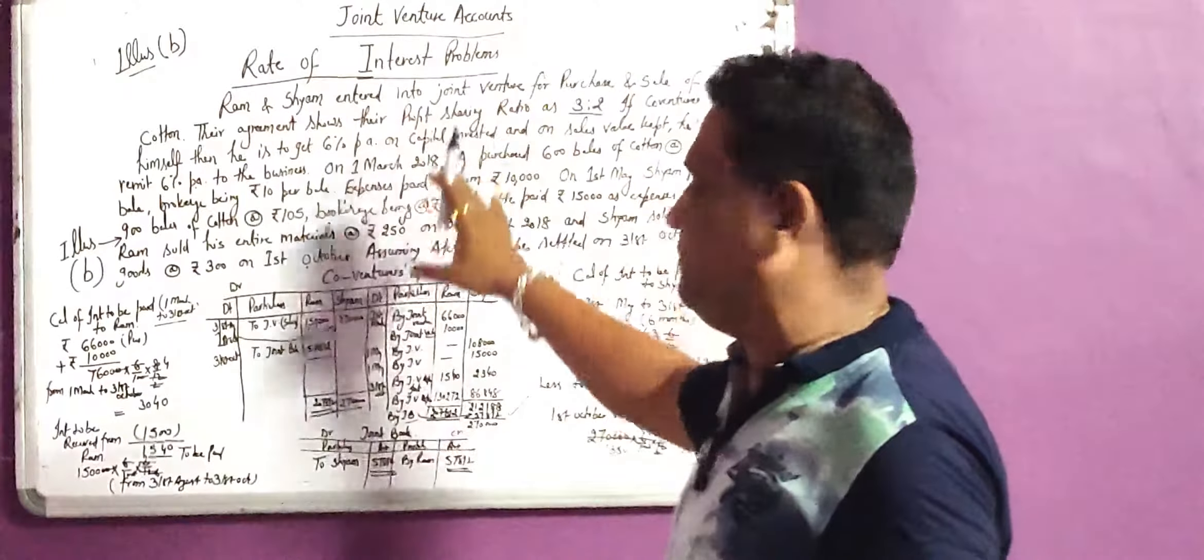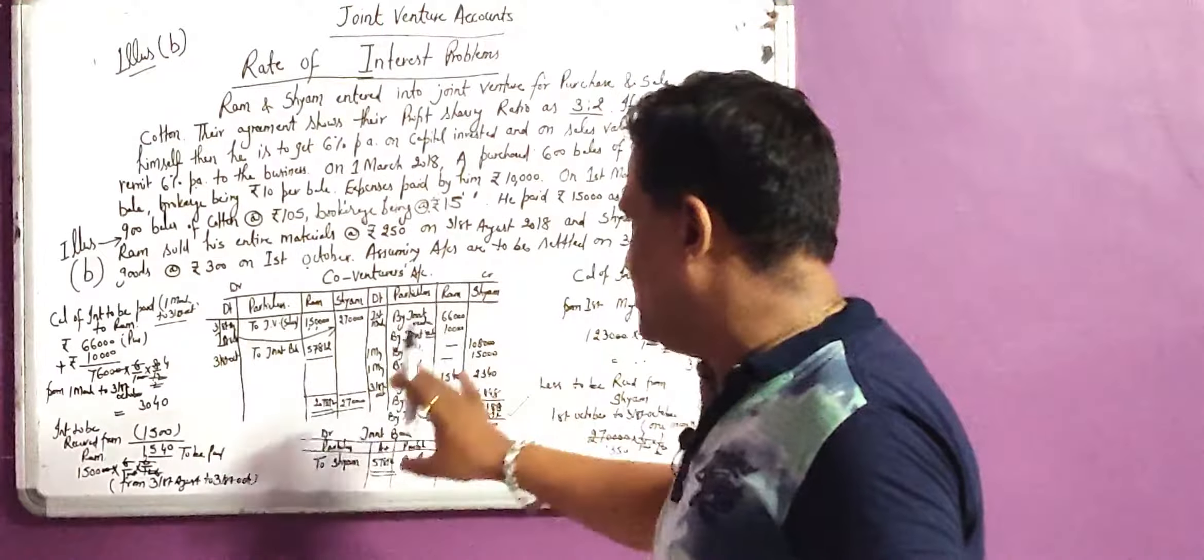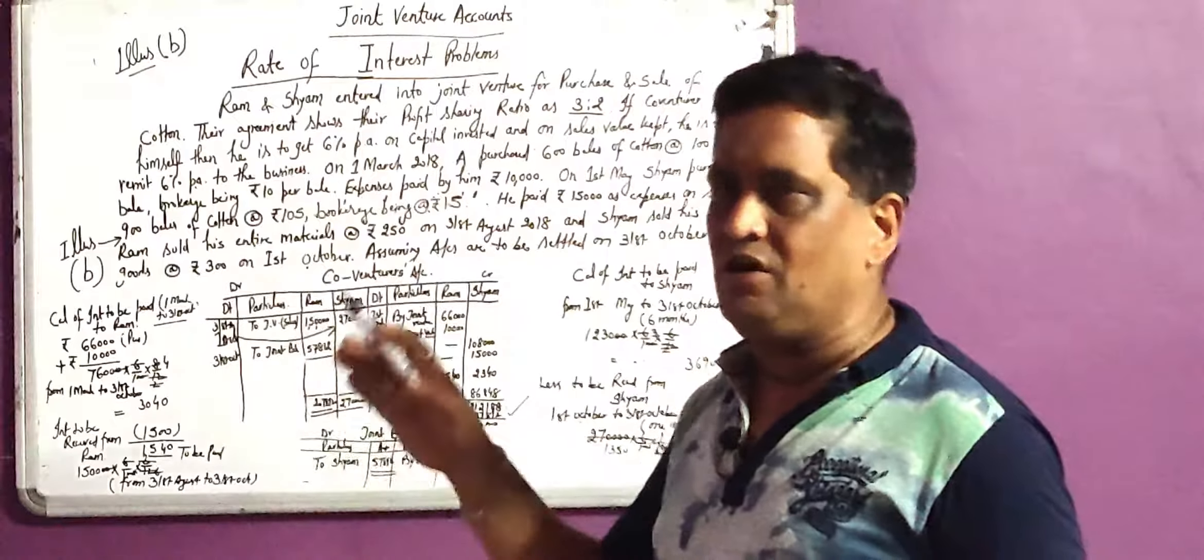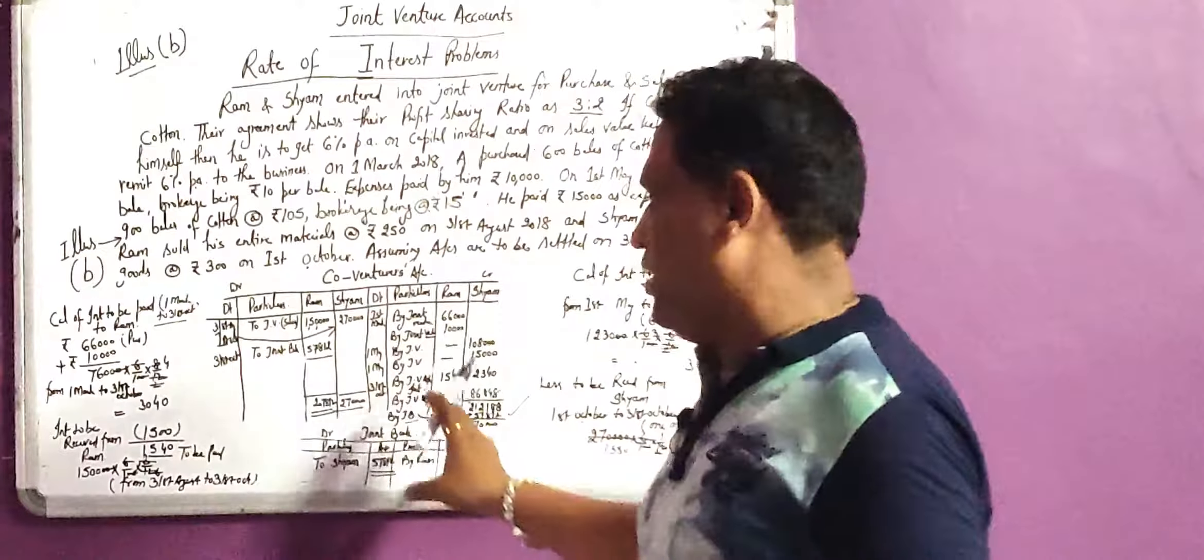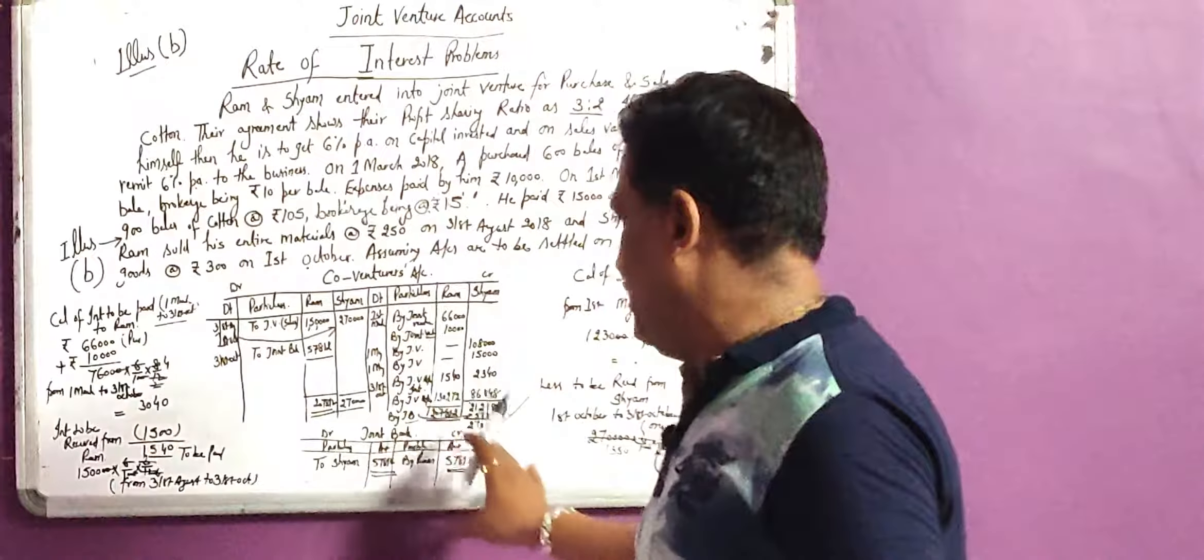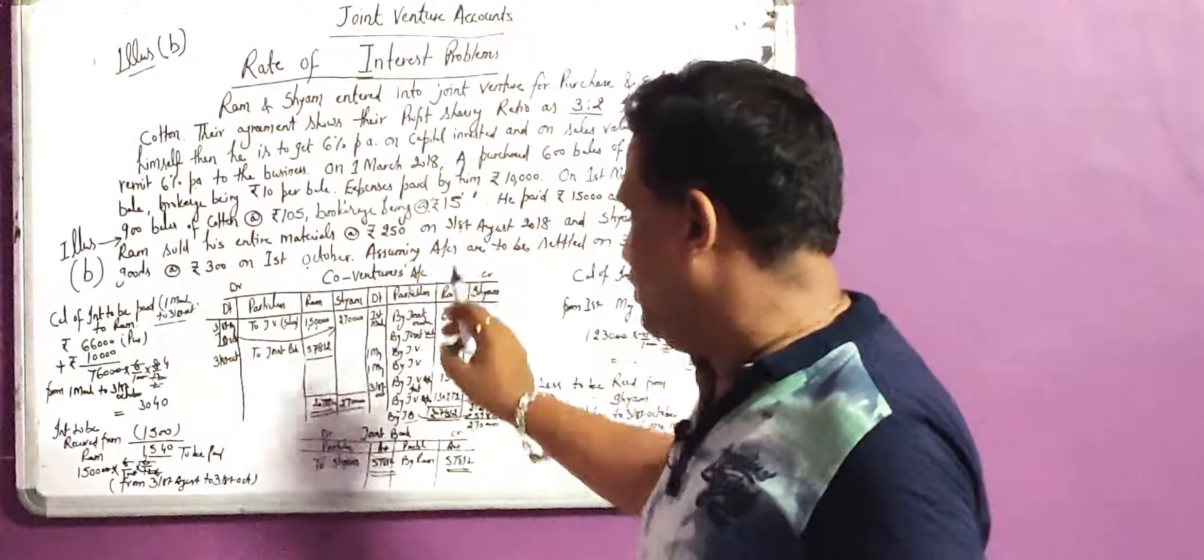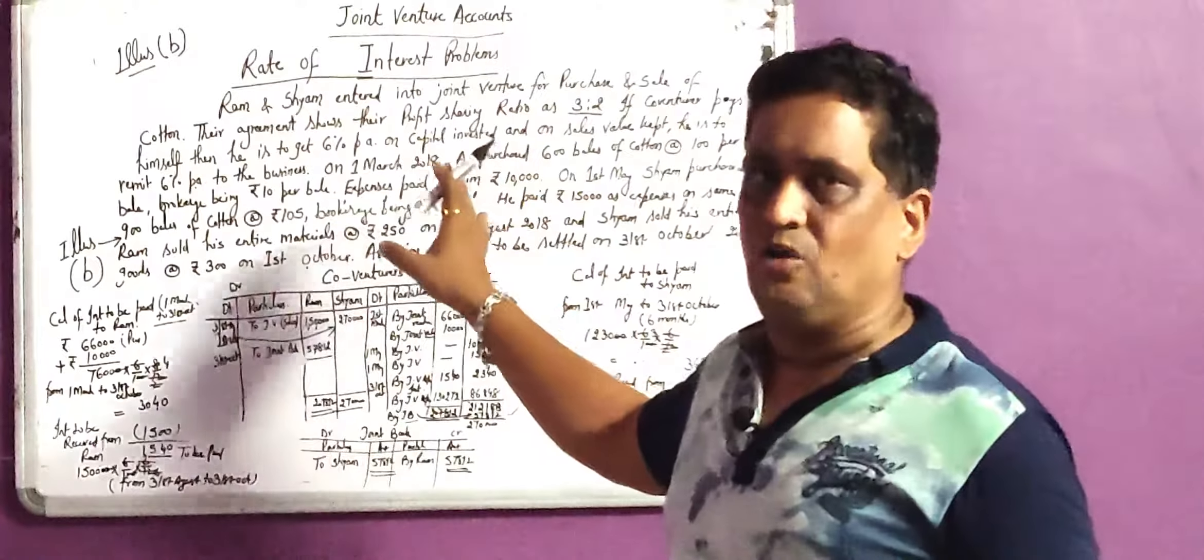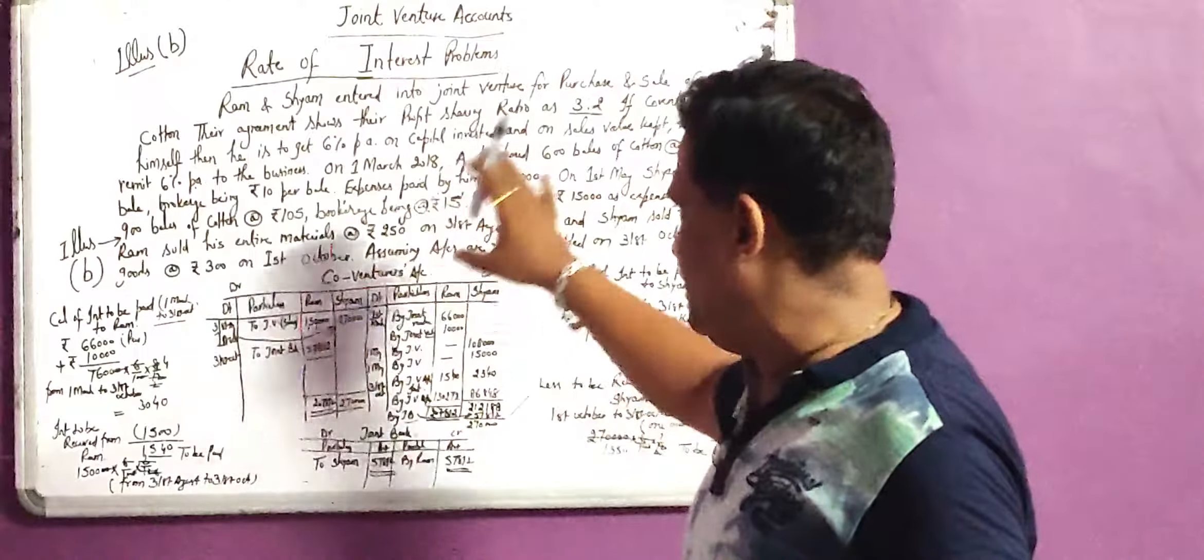So same transaction we are repeating in the joint bank and no other check payment, no other cash payment is appearing in the illustration. It is very interesting, very important illustration and only last balancing figure will be by the joint bank or to joint bank. One co-venturer pays and one co-venturer receives. In this way we have cleared the illustration. There is no joint bank and we are clearing all the illustrations so that every problem should be clear. Thank you very much.